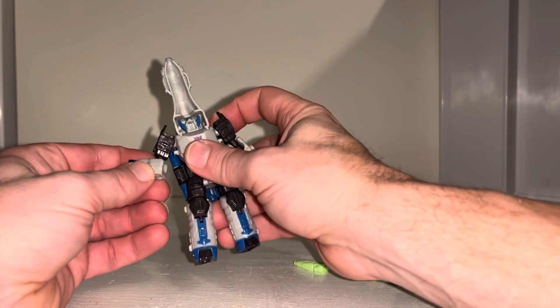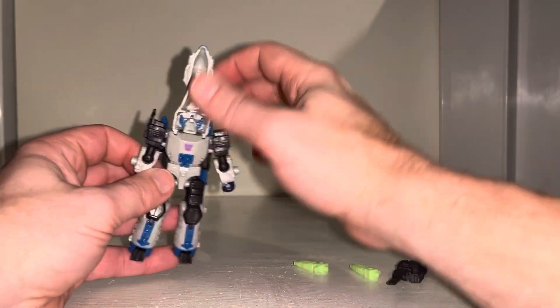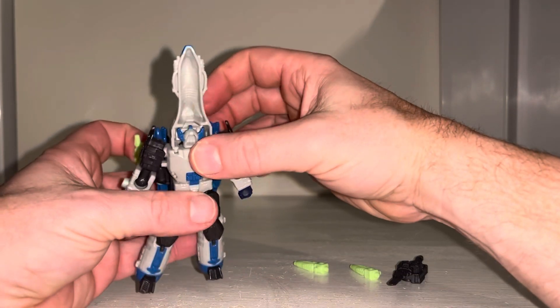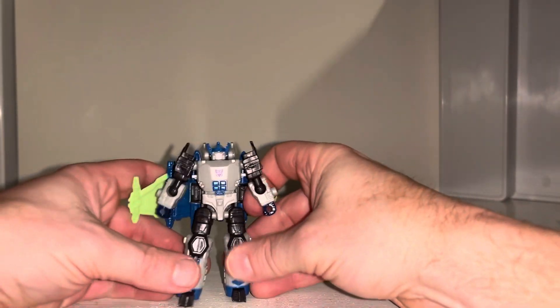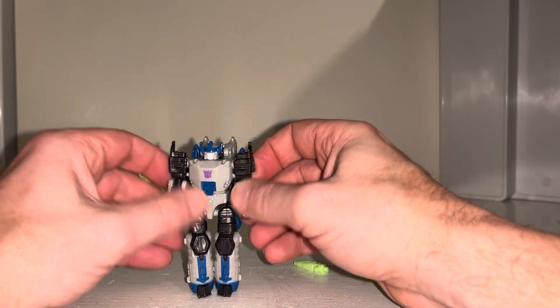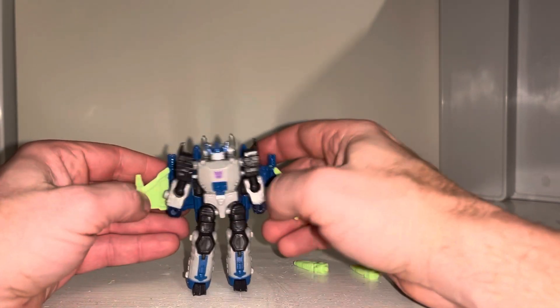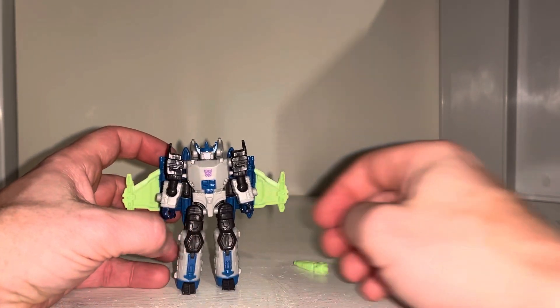Rotate it around there, fold this bit back, rotate the head around. Then of course it's up to you where you want to put the accessories, either in his hands or on the shoulders. There you go, he's in his robot mode.